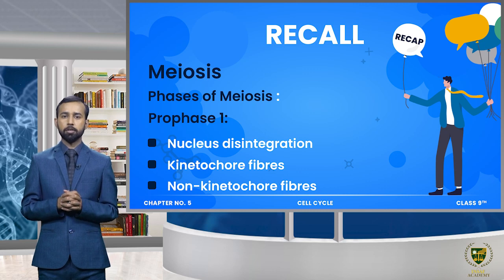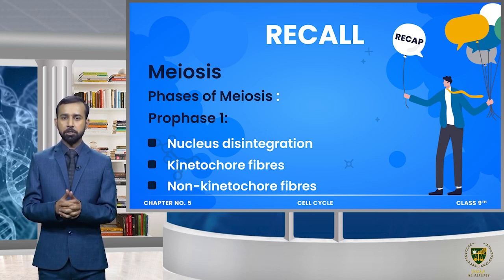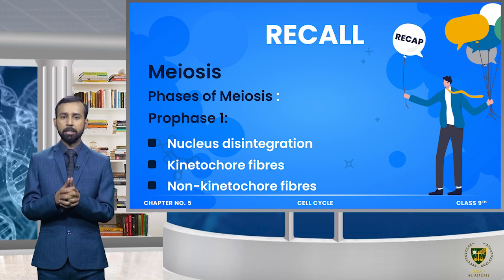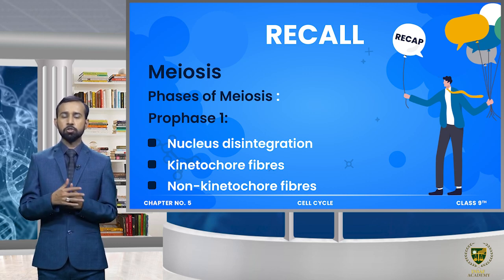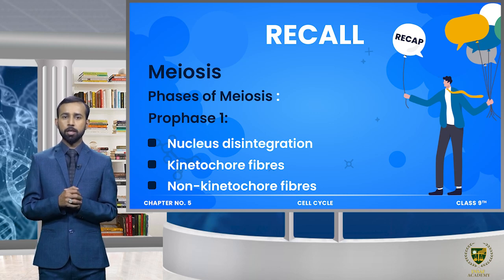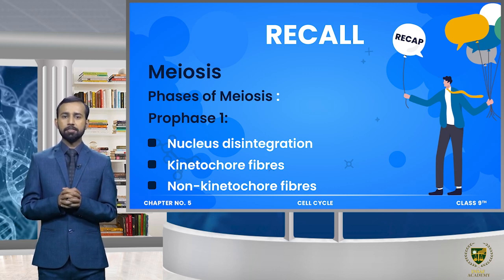اس variety کی وجہ سے organisms جو ہیں وہ next generations میں adaptation یا survival کے لیے abilities یا genes کو transfer کرتے ہیں۔ Meiosis میں ان variations کی وجہ سے جو organisms produce ہوتے ہیں ان کے پاس ability ہے کہ وہ different environmental conditions میں survive کر سکیں۔